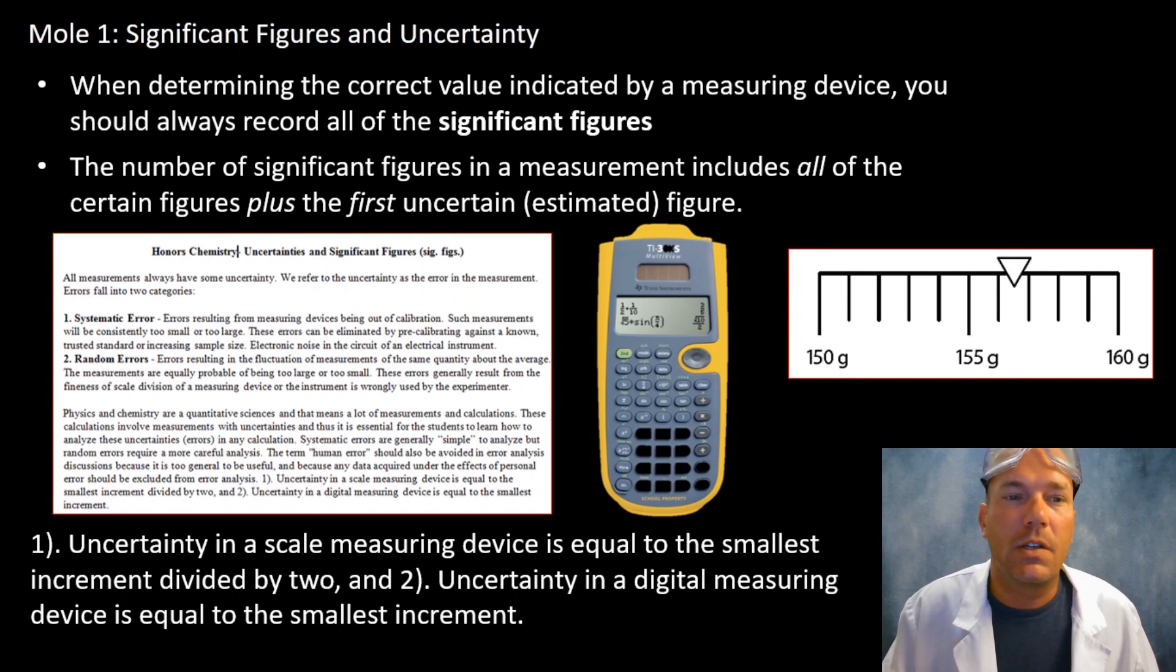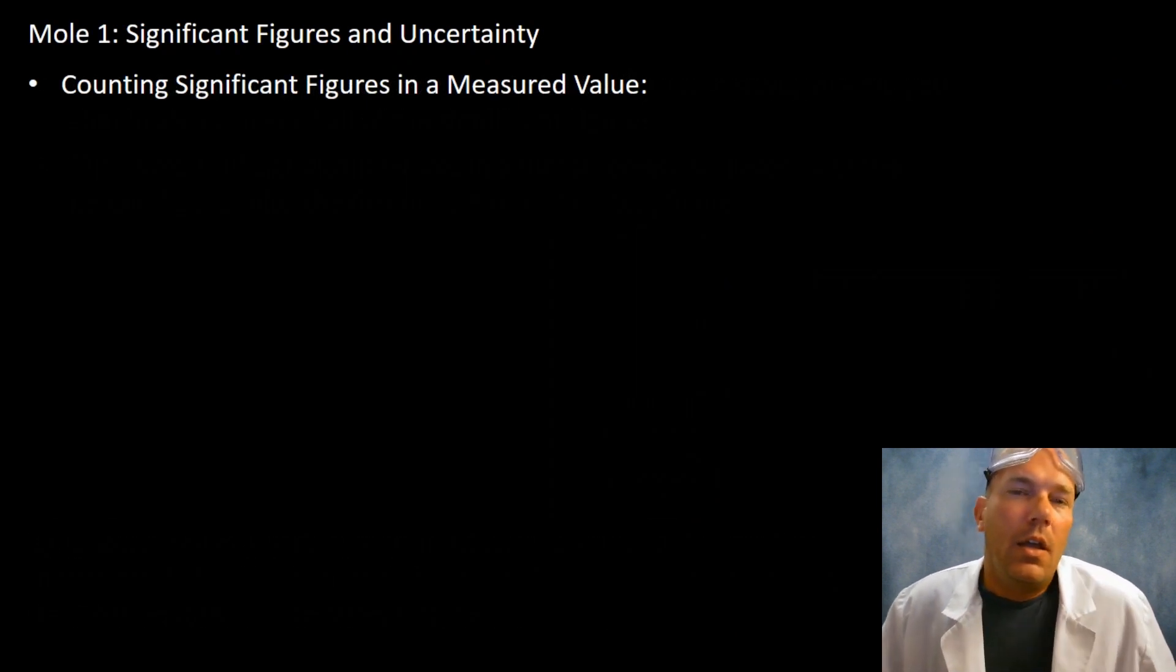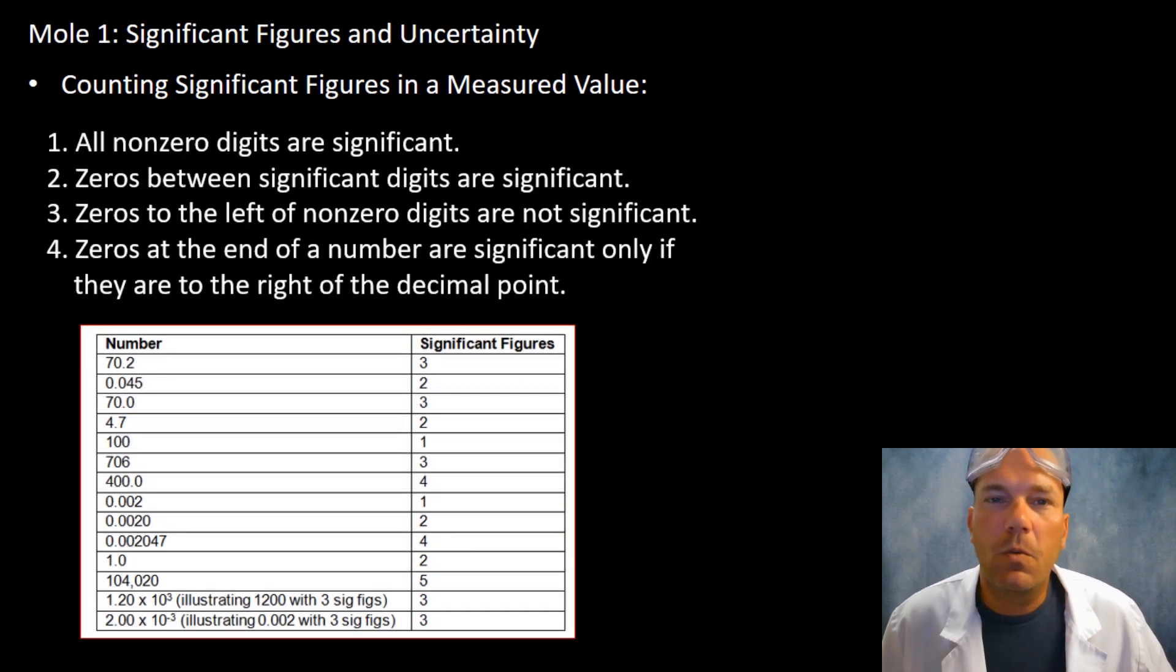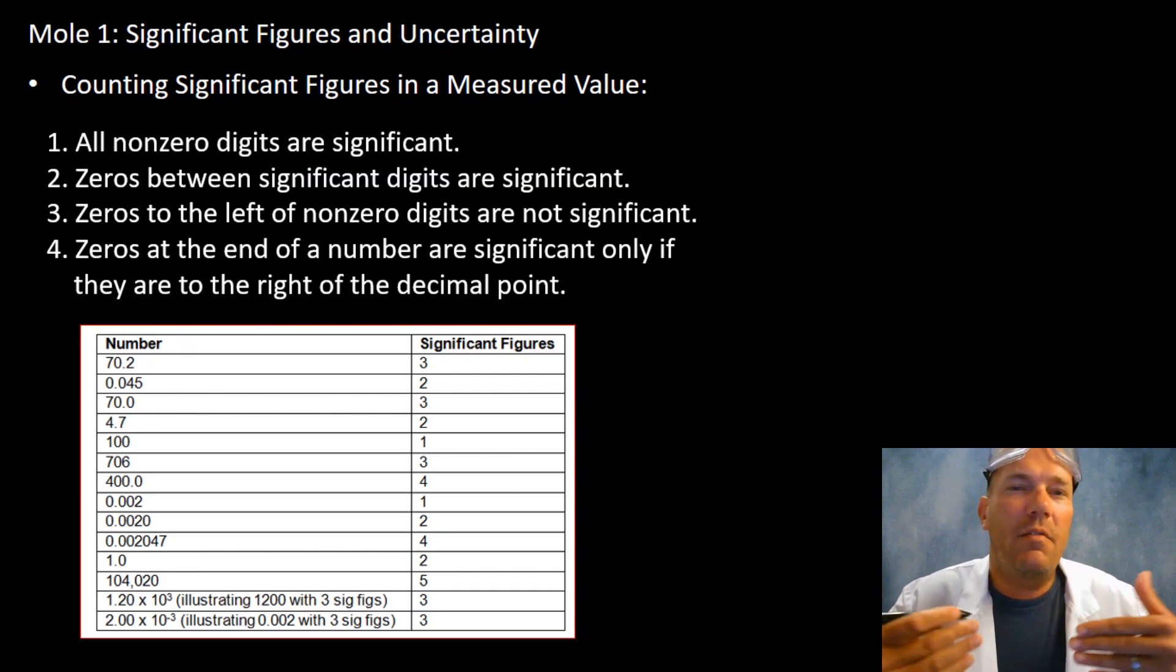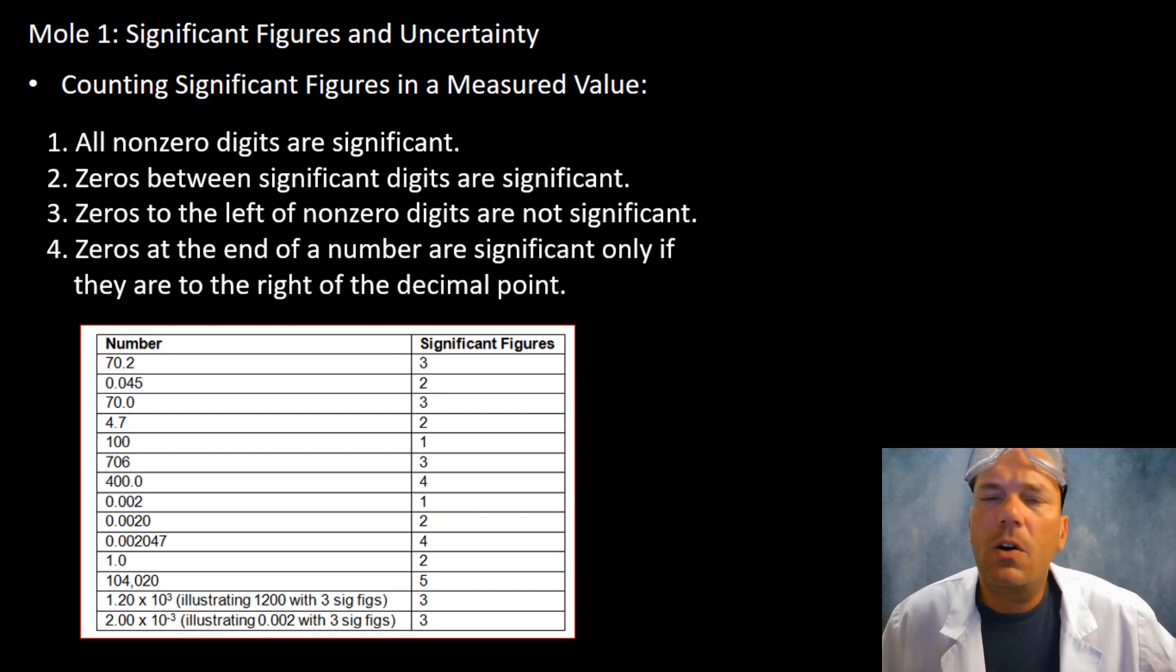For counting, I do have a set of four rules that I want you to jot down. Keep in mind, let's say you have a ruler and you're measuring the length of something. All non-zero digits are going to be significant - those are numbers you've measured.